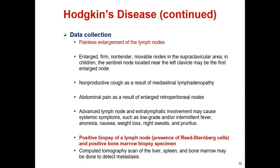Key signs include painless enlargement of lymph nodes — this is very characteristic of Hodgkin disease. If the lymph node is painful, it is not Hodgkin disease. There is enlarged, firm, non-tender movement of lymph nodes in the supraclavicular area. In children, the sentinel node near the left clavicle may be the first node affected. Non-productive cough may result from mediastinal lymphadenopathy.